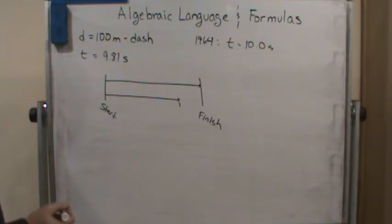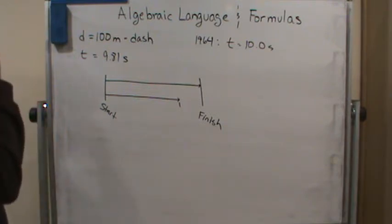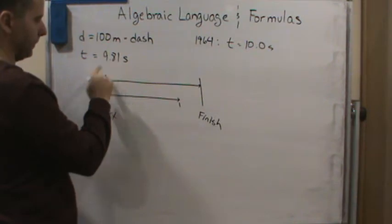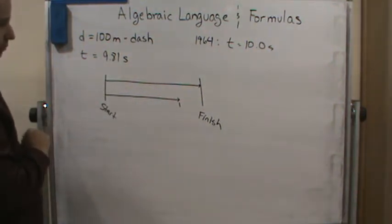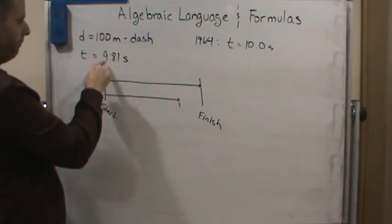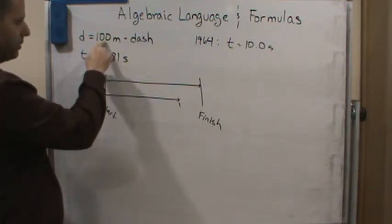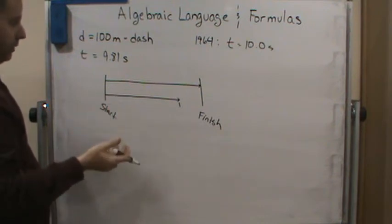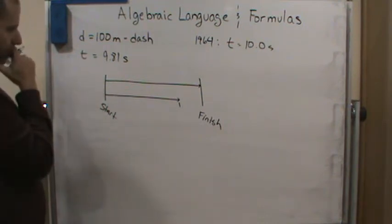So now, we know that he's going to cross the finish line at 9.81 seconds. We know that it's going to take Bolt 9.81 seconds to go 100 meters, right? Whereas it took Hayes 10 seconds to go the same 100 meters.